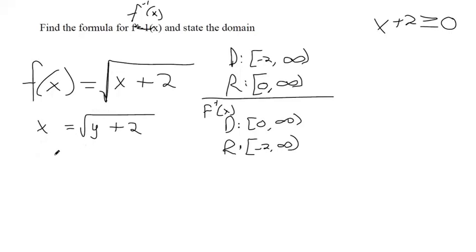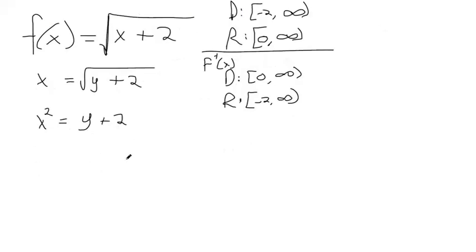Square both sides to get rid of the square root. And remember, a square root can only have positive or zero come out of it, so you don't need to worry about the plus or minus symbol in this case. It's when you square root a squared variable that you need to worry about plus or minus. So I squared both sides, got rid of the square root, and I'm going to subtract both sides by 2.